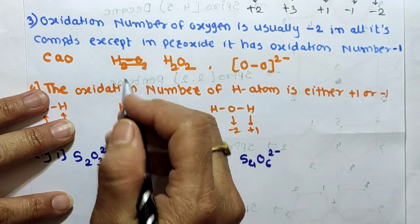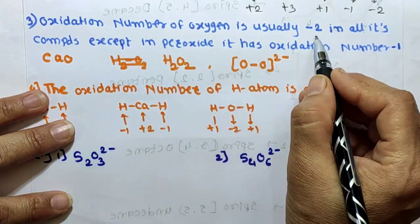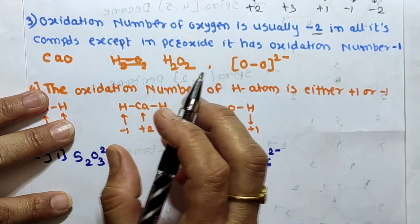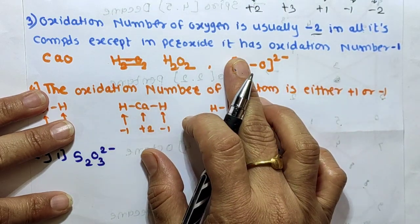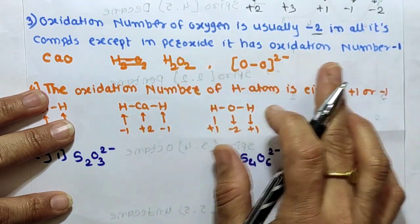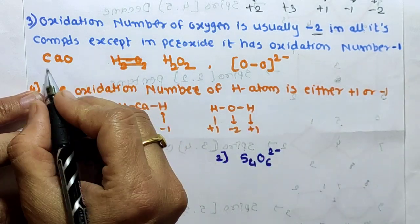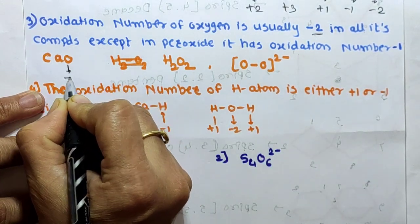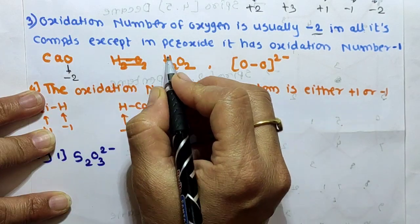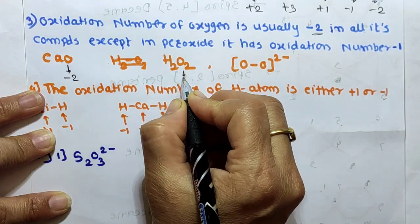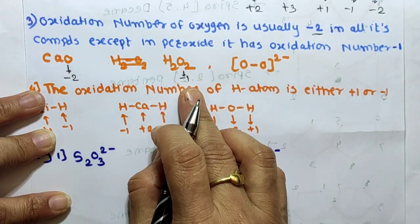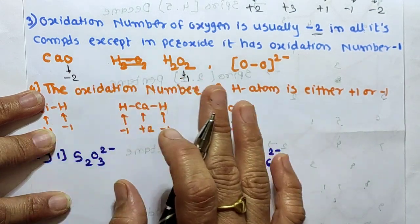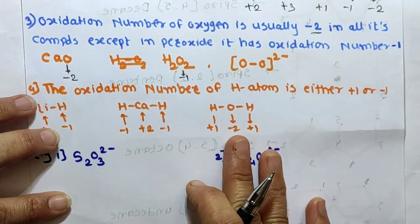Rule 3: The oxidation number of oxygen is usually -2 in all compounds, except in peroxides. In peroxides, the oxidation number of oxygen is -1. For example, in calcium oxide the oxidation number of oxygen is -2, but in hydrogen peroxide it is -1. In all other compounds, oxygen shows the -2 oxidation state.